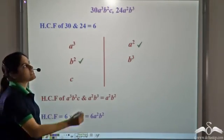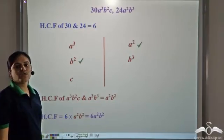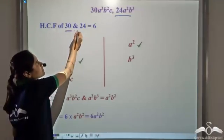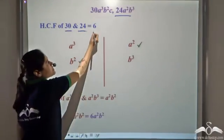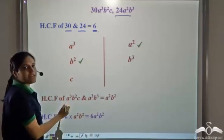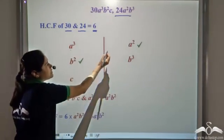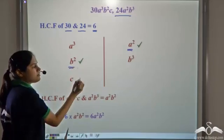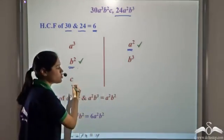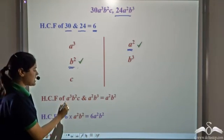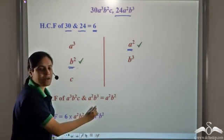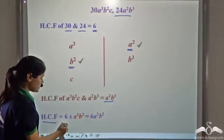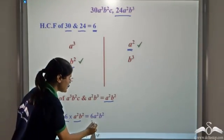When you had to calculate the HCF of 30a³b²c and 24a²b³, you first found the HCF of 30 and 24, which was 6. Then you found the HCF of the algebraic part — considering common variables and taking the lowest power: a²b². We don't take c because c does not appear in both terms. So the HCF of these two terms is 6 × a²b² = 6a²b².